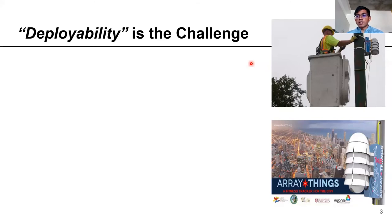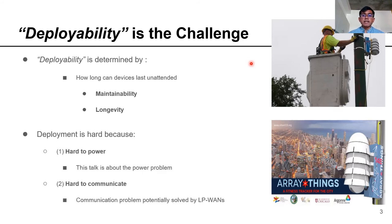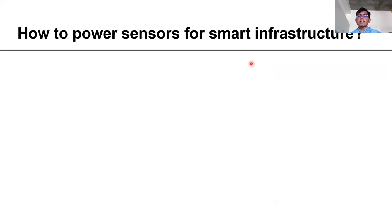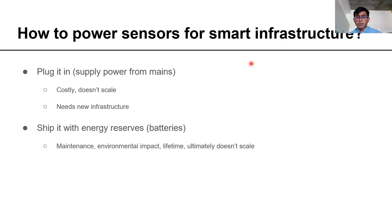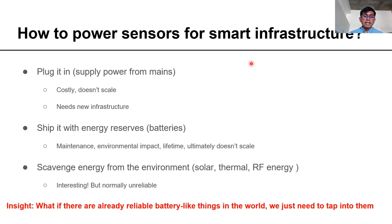The main challenge we face is deployability — determined by the ease of maintenance and overall lifetime of the devices. The deployment of these devices is hard because they are hard to power and hard to communicate with. In this talk we'll mostly focus on the power problem, which is fundamental to scaling any IoT solution. To power sensors for smart infrastructure: we can plug them in, but that requires costly infrastructure that doesn't scale; we can provide batteries, but that trades one maintenance problem for another due to limited lifetimes; or we can scavenge energy from the environment — solar, thermal, RF — but that has historically proven unreliable.